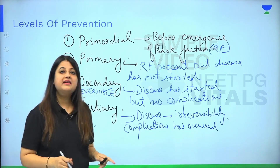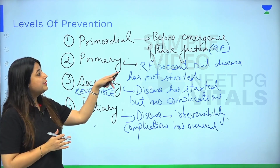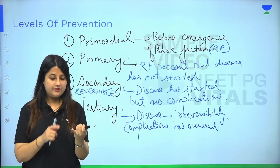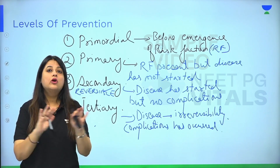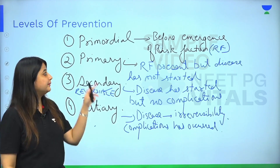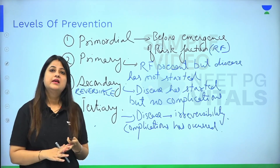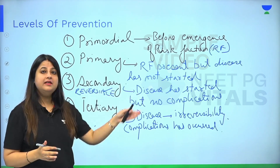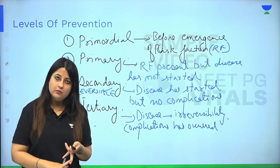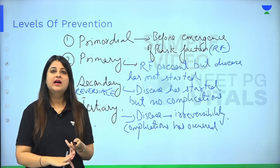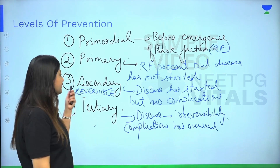Let's review. Primordial level of prevention is before the emergence of risk factors — you neither smoke nor drink, you are not exposed to any risk factor. Primary level of prevention: risk factor is present but disease has not yet started. That means you are smoking and drinking but no pathological change has started in your body.